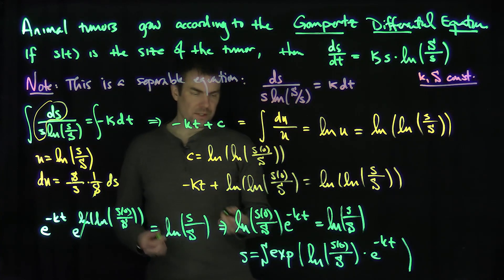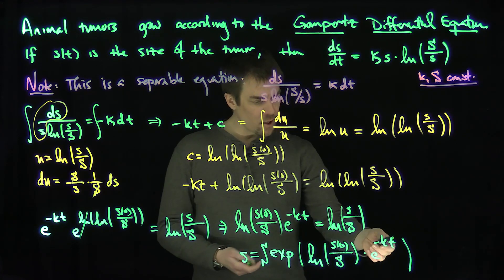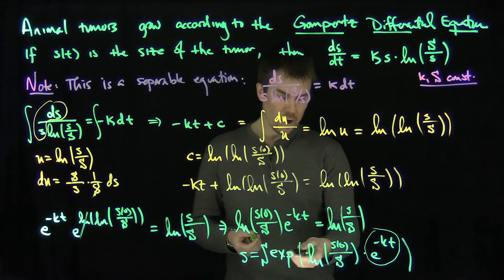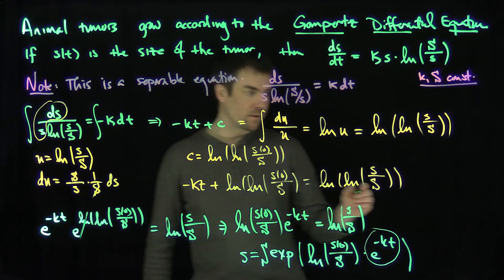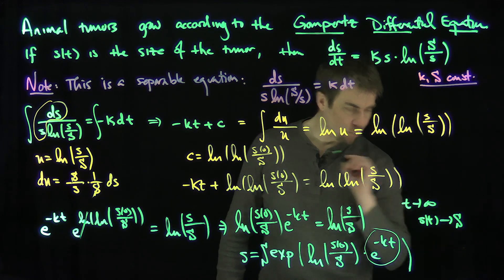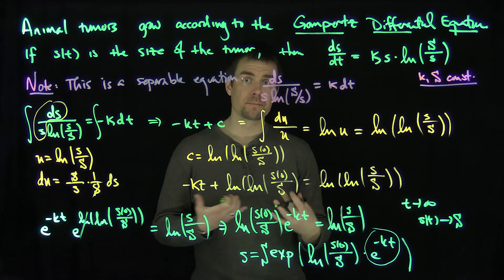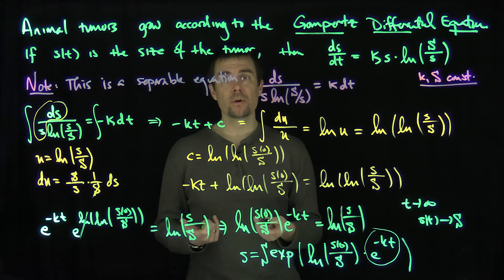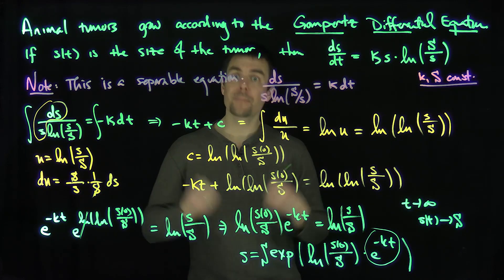From this solution we see that the tumor starts at size s₀. As t goes to infinity, e^(−kt) goes to zero, so the exponent goes to zero, and the exponential of zero equals one — meaning s(t) tends to S capital, the carrying capacity, the largest size of the tumor according to this model. The Gompertz law can be explicitly solved using separation of variables, yielding a double exponential form involving a double logarithm. Thank you very much.